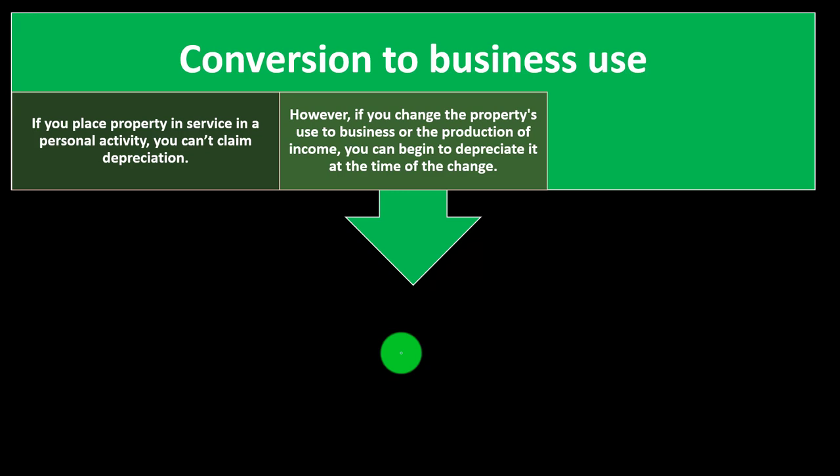That's why it gets a little funny — most likely because of lobbying in the housing area. But you don't get to depreciate your personal residence. However, if you change the property's use to business or the production of income, you can begin to depreciate it at the time of the change. So if you moved it from your personal home to rental property, now it went from personal use — where you usually don't get a deduction — to business use, where you typically do.